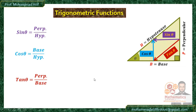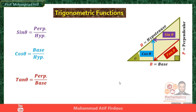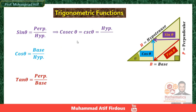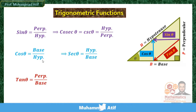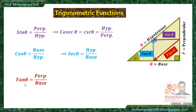This is a very simple way to remember the ratios for sine theta, cosine theta, and tangent theta. The reciprocal of sine theta is cosecant theta, which equals hypotenuse over perpendicular. The reciprocal of cosine theta is secant theta, which equals hypotenuse over base. And the reciprocal of tangent theta is cotangent theta, which equals base over perpendicular.